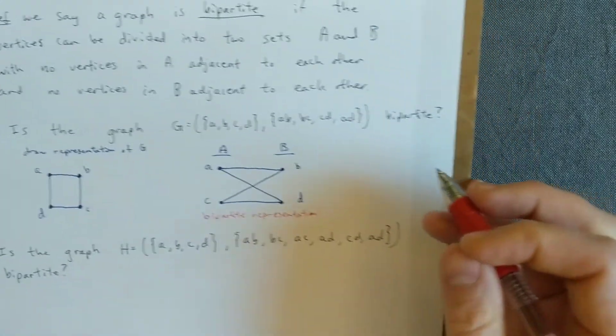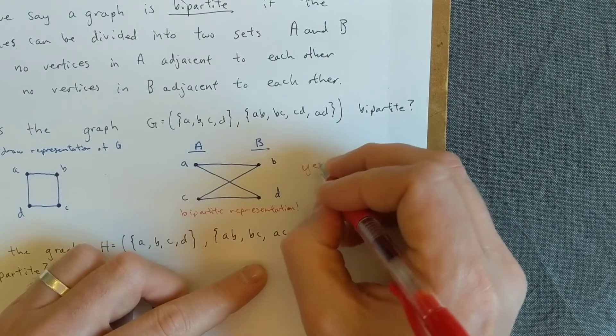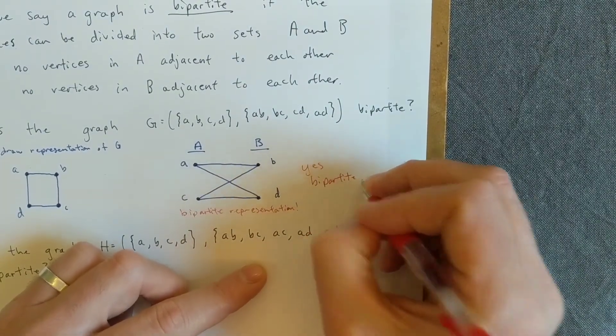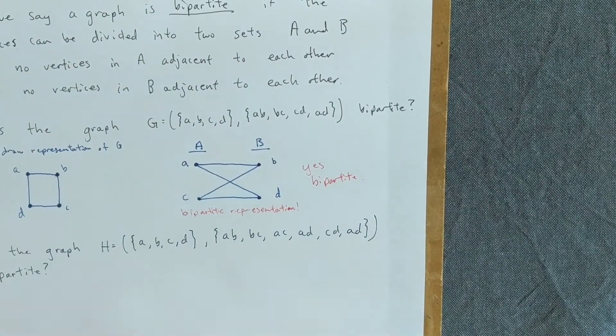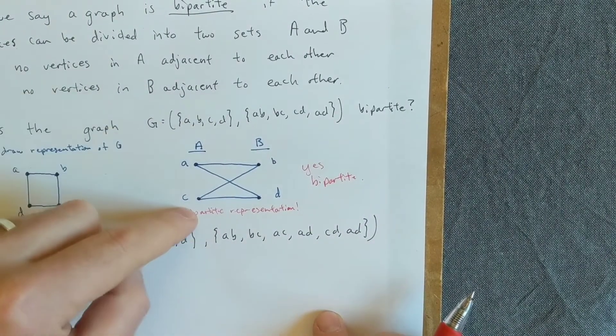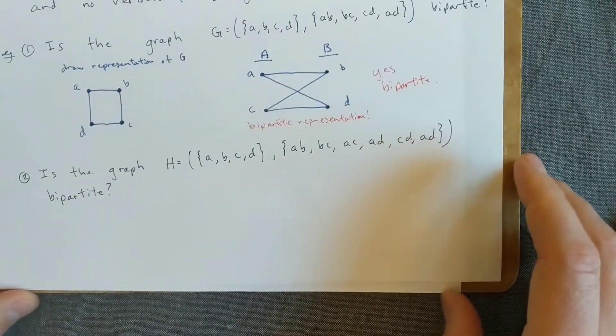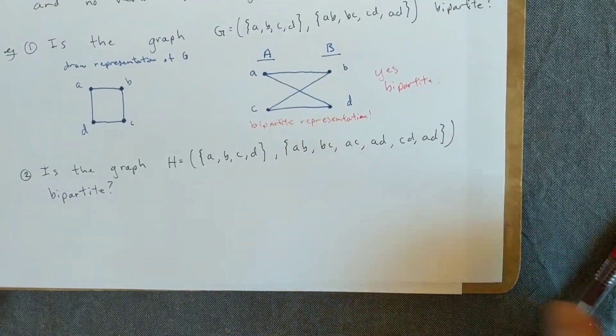So this, yes, this is bipartite. I was able to separate the vertices into two sets A and B, and there are no connections within A, no connections within B, but connections between them. Okay, so let's look at an example that doesn't work.